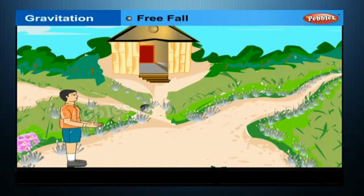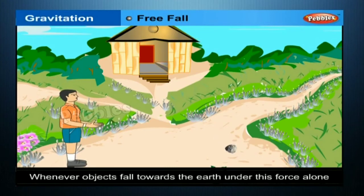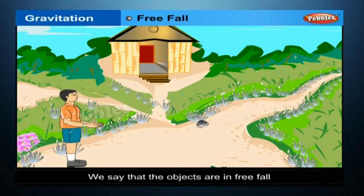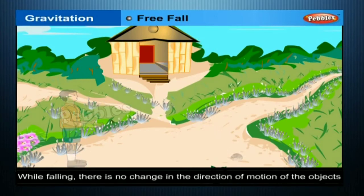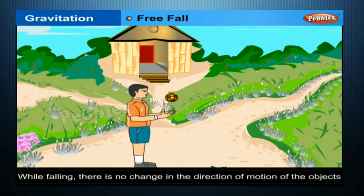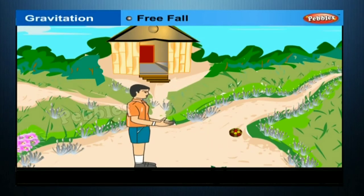Free fall: take a stone and throw it upwards. It reaches a certain height and then starts falling down. Whenever objects fall towards the earth under this gravitational force alone, we say the objects are in free fall. There is no change in the direction of motion of the objects, but due to the earth's attraction there will be a change in the magnitude of the velocity.